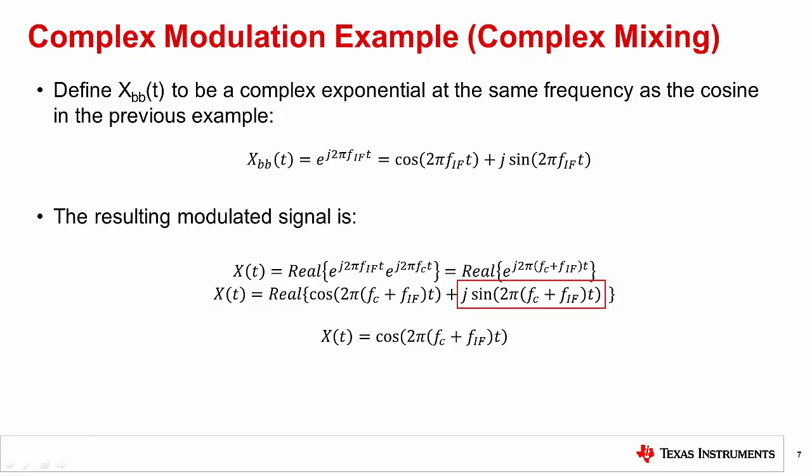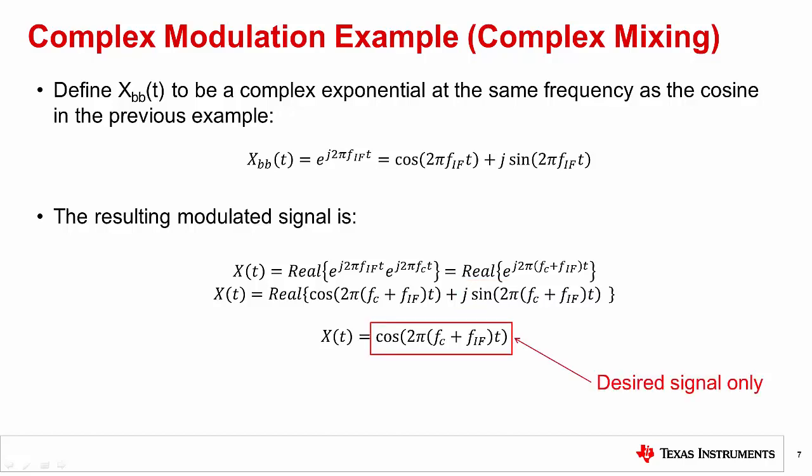The imaginary sine component is removed by the real part function. This new modulated signal contains only the desired signal, with the image signal being attenuated or rejected.